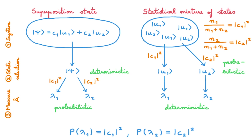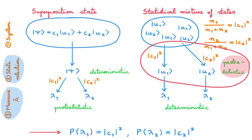Now, what happens in the case of a statistical mixture of states? We have state u1 with probability |c1|² and state u2 with probability |c2|². If we have u1, the probability of getting mu_m is simply this; and if we have u2, the probability of getting mu_m is this. Putting this together, the total probability of getting mu_m is the probability of having u1 times the probability of getting mu_m in state u1, plus the probability of having u2 times the probability of getting mu_m in state u2.